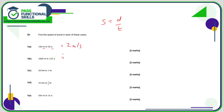1000 divided by 125 is 8 metres per second. 20 divided by 1 is obviously 20, so that's 20 kilometres per hour. 35 divided by half — so here you're going to type in 0.5 — that works out as 70 kilometres per hour.